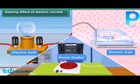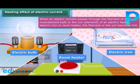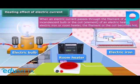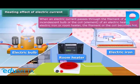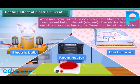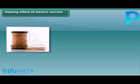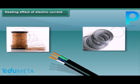Heating effect of electric current: when an electric current is passed through a metallic wire, like the filament of a bulb or coil of an electric heater, geyser, electric iron, or room heater, the coil becomes hot and glows. This is known as the heating effect of electric current. In this condition, they radiate heat and light. The amount of heat produced in a wire depends on its material, length, and thickness.